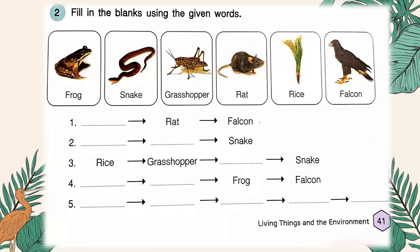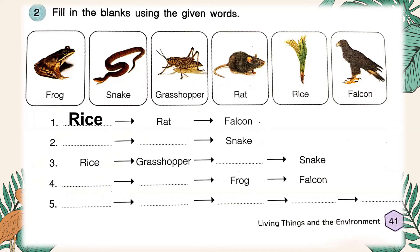For the second part, fill in the blanks using the given words: frog, snake, grasshopper, rat, rice, and falcon. For number one, blank is eaten by rat and rat is eaten by a falcon. The producer for number one is rice — so you write 'rice' here. For number two, you have to write two answers: the producer and the consumer.